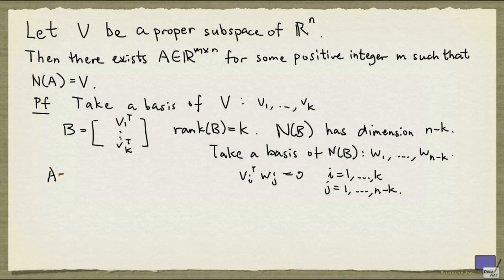Now we let A be the matrix whose rows are W1 transpose all the way to W n-k transpose. And we're going to claim that the null space of A is precisely V.